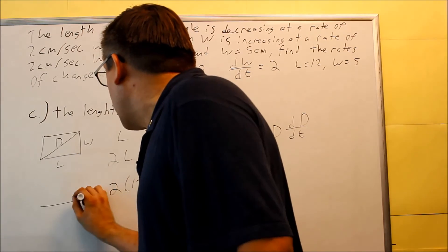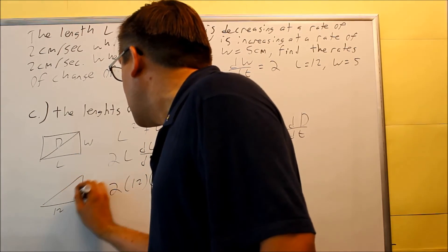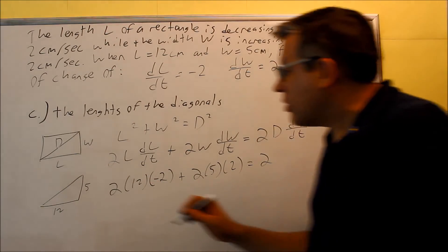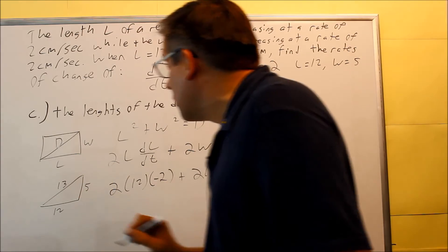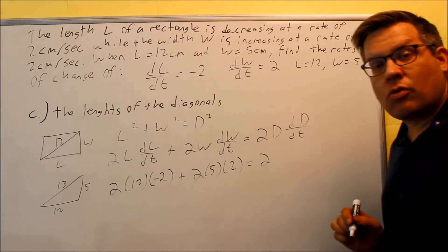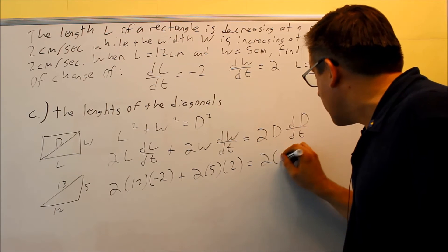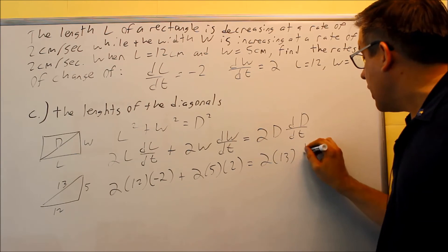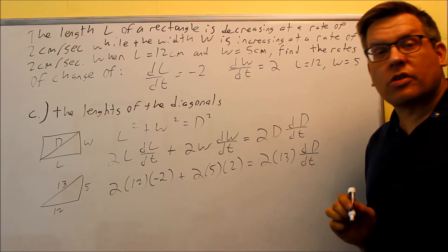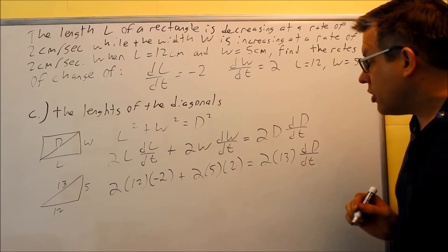So I have a right triangle, 12, and I have a 5. I want to find the D, you can use Pythagorean theorem on that, or recognize it's a special 5, 12, 13 triangle, and you get that your D is equal to 13. So I'll put 13 in right here, and then the only variable that is unknown is what we're trying to solve for. So this is what we're going to be going for here.